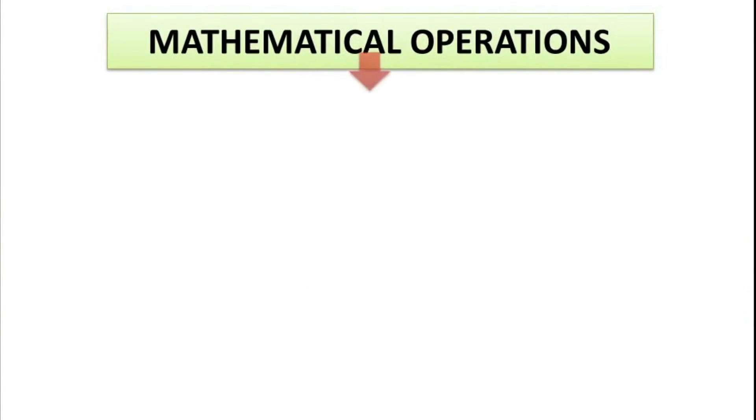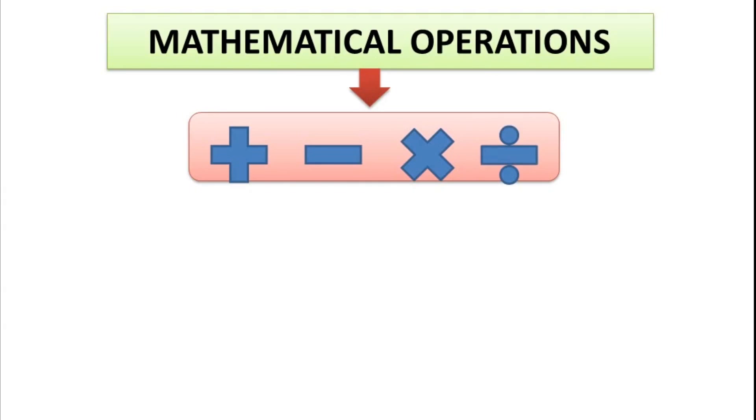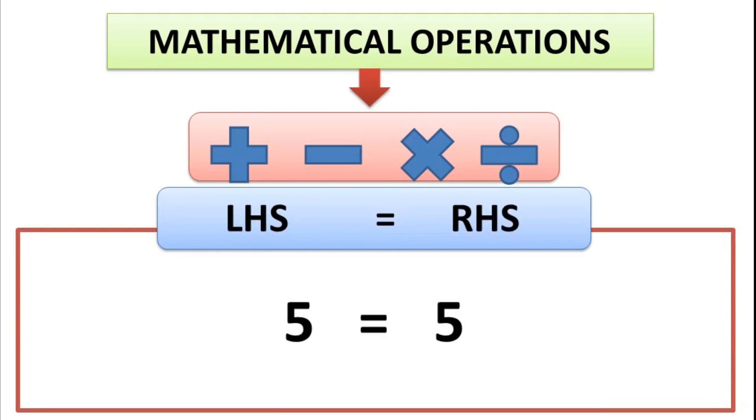In mathematics, we learnt that if we do mathematical operations like addition, subtraction, multiplication and division using same number on the both sides of an equation, equation will remain correct. Like, let us write an equation as 5 is equal to 5. If we add 2 on both sides of the equation or subtract or divide or multiply with the same number, equation will be correct.